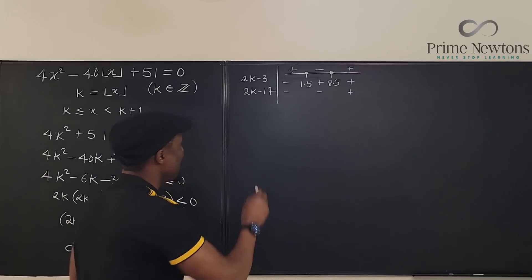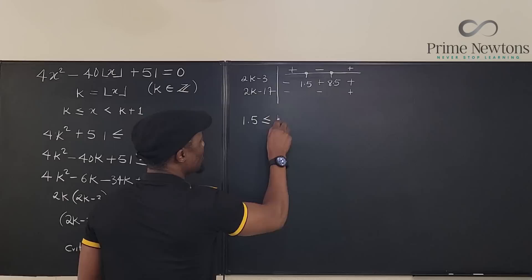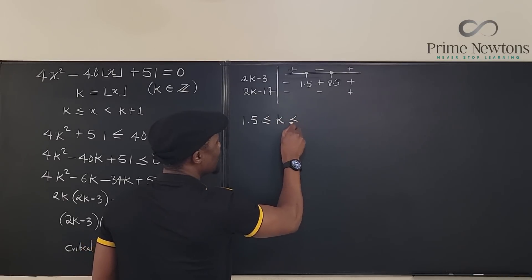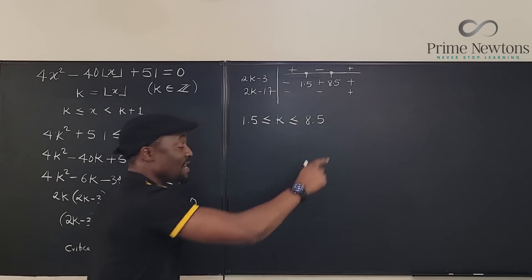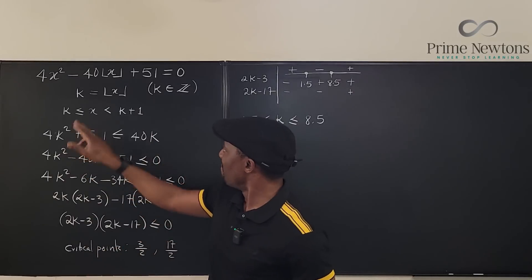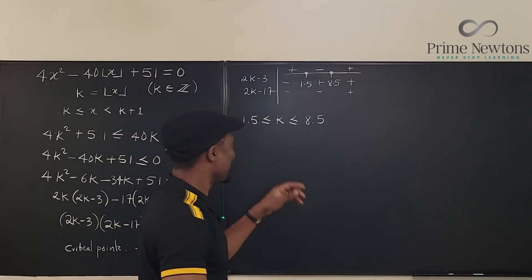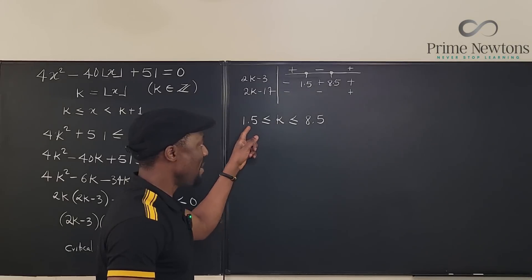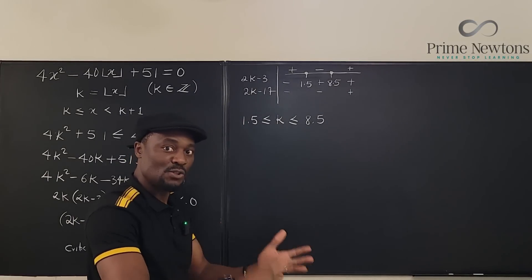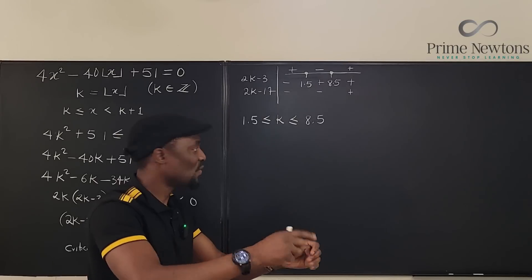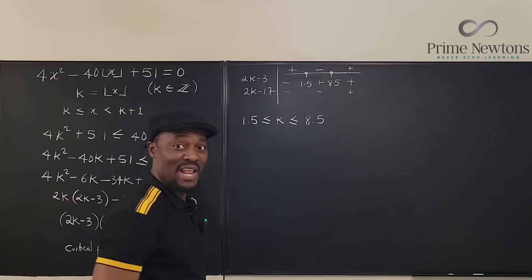Let's go to something beyond 8.5. What do we have? We're going to get, let's pick 10. If you put 10 here, definitely this is positive. If you put 10 here, 20 - 17 is going to be positive also. So this is positive. So the answer we're looking for lies between 1.5 and 8.5. So you can easily say that 1.5 is less than or equal to k and k is less than or equal to 8.5. So from here, clearly, the value of k for this quadratic equation has to be, remember k is an integer. What integer is bigger than 1.5? It is 2 or 3 or 4 or 5 or 6 or 7 or 8. Those are so many options. Let's keep this for now.